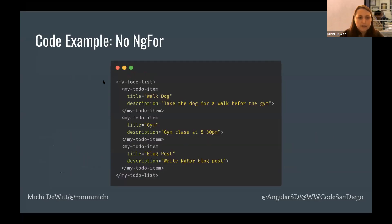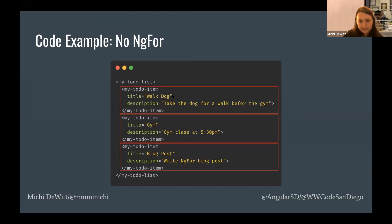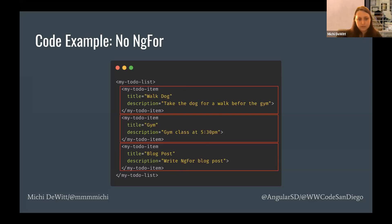Let's look at a to-do list example without ngFor. I have a 'myTodoList' component with 'myTodoItem' repeated three times — walk the dog, go to the gym, write a blog post. This is not great because we have the same code repeated multiple times; the only difference is the title and description. That means if I want to add an event listener or extra property to my todo item, I have to add it in three places. And this is really static — I can't add extra to-do items without changing and deploying new code.